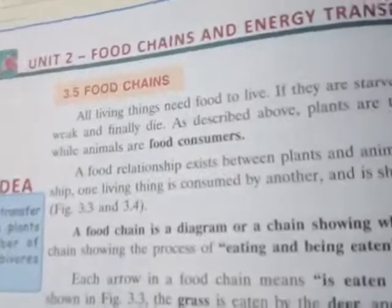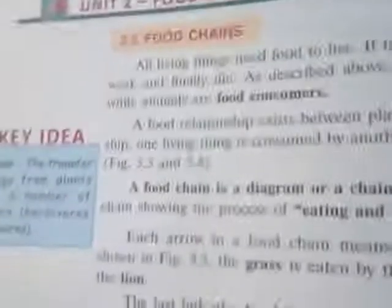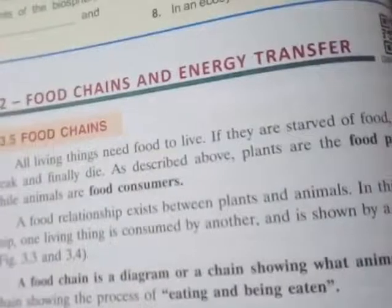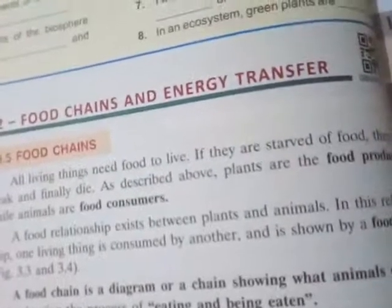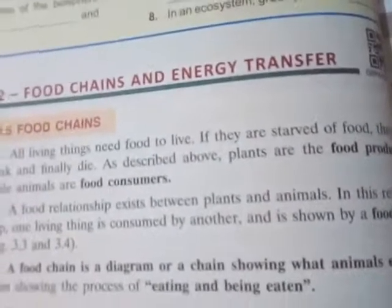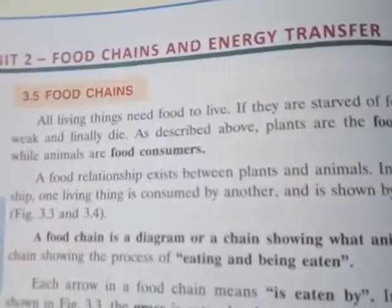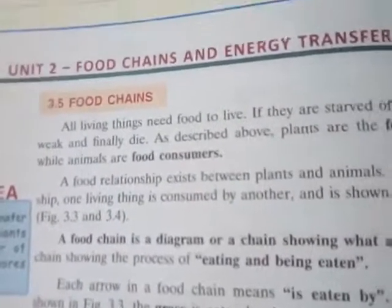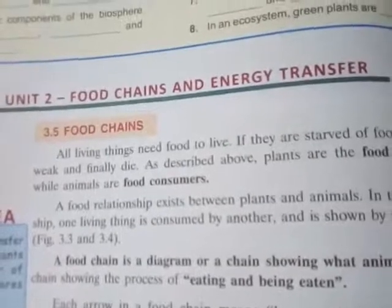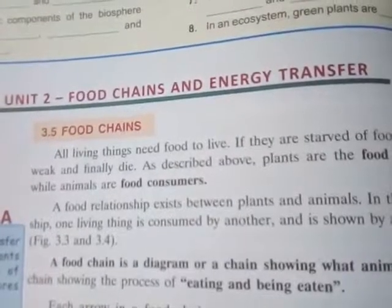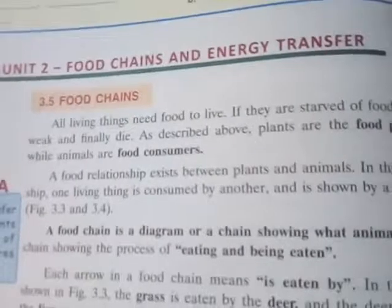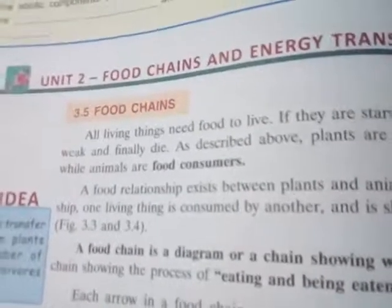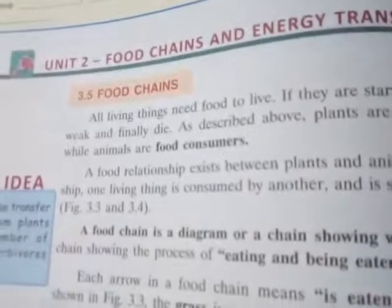Consumers may be herbivores or carnivores. Simply put, a food chain is the food relationship between plants and animals — the transfer of energy from plants to animals or other consumers like herbivores and carnivores.